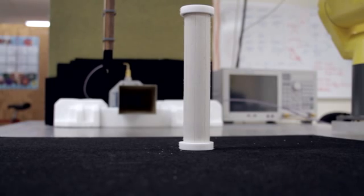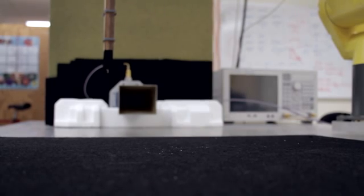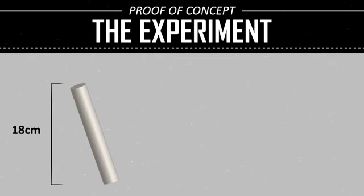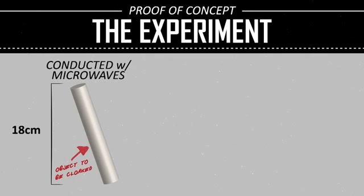If our eyes saw microwaves instead of visible light, this cylinder would be invisible. The cylinder is 18 centimeters long, a little under two wavelengths.